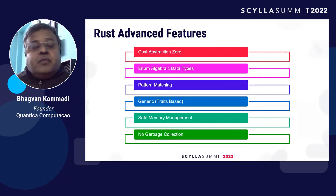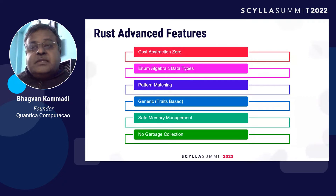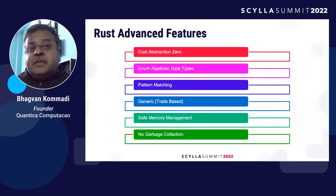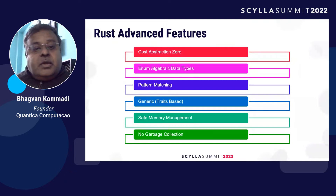Looking at the advanced features: the cost abstraction is zero, and we have enums which are almost like algebraic data types. You have pattern matching — constructs which can be used to identify patterns within strings or data. You can also have generics using traits. Generics are popular in Java where you want a list of strings, array of strings, or collections with a specific type. Memory management is safe — there are no segmentation faults.